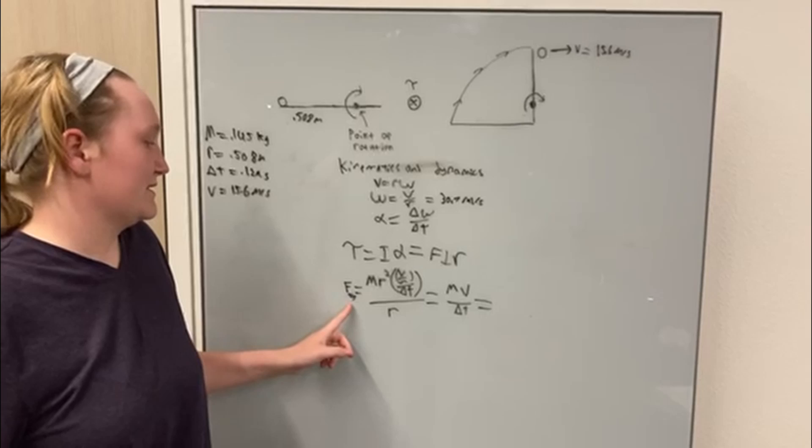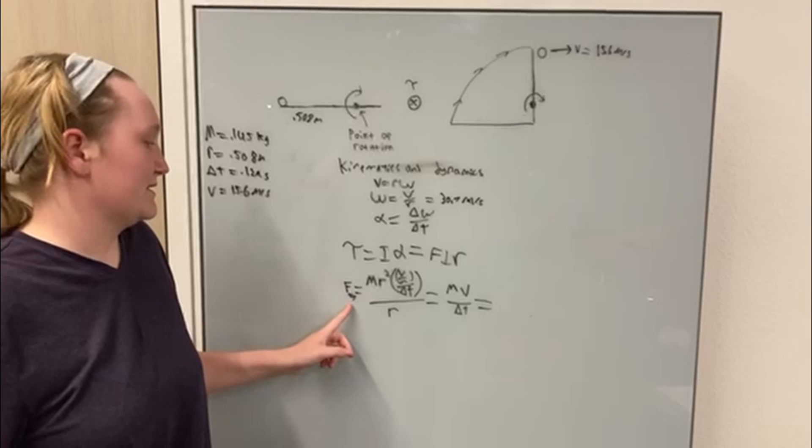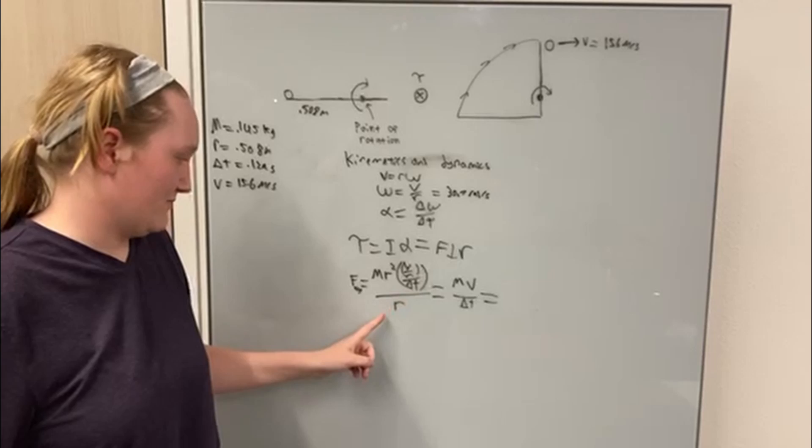The entire equation written out would be the average force equals mass times radius squared times velocity divided by radius over change in time, all over radius. And the simplified equation would just be mass times velocity over change in time.